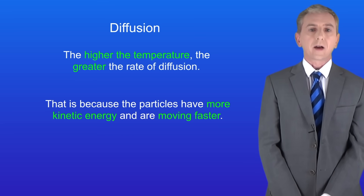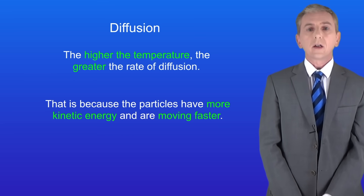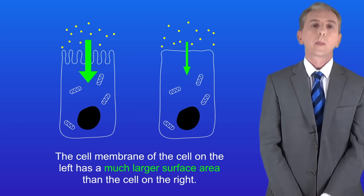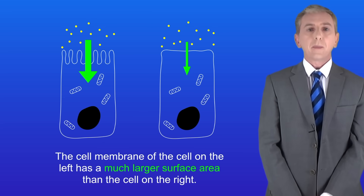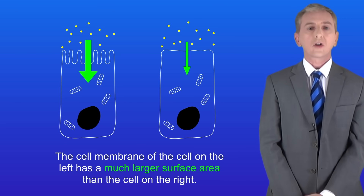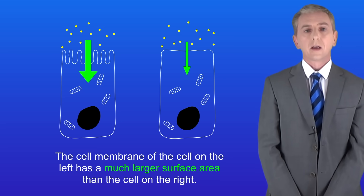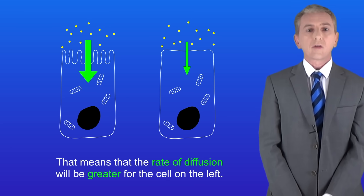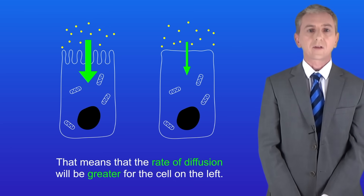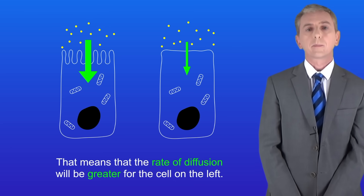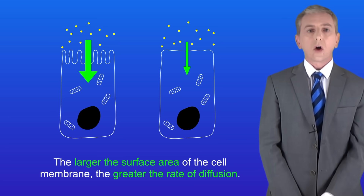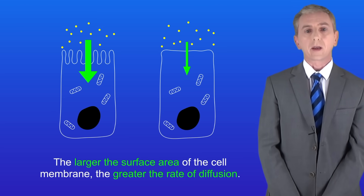The final factor is the surface area of the membrane. The cell membrane of the cell on the left has a much larger surface area than the cell on the right, meaning that the rate of diffusion will be greater for the cell on the left. Remember, the larger the surface area of the cell membrane, the greater the rate of diffusion.